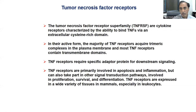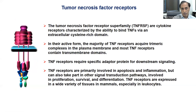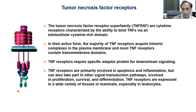The tumor necrosis factor receptor superfamily, or TNFRSF, are cytokine receptors characterized by their ability to bind TNFs via extracellular cysteine-rich domains. In active form, the majority of TNF receptors form trimeric complexes in the plasma membrane, contain transmembrane domains, and have intracellular regions. Unlike kinase receptors, they lack enzymatic activity and instead recruit adapter proteins to convey signaling.